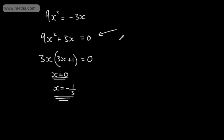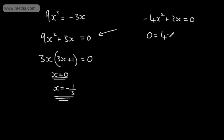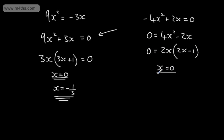All we're doing is factoring them. Let's finish with one more: minus 4x squared plus 2x is equal to 0. I could factor the negative, but alternatively I'll add 4x squared to both sides and subtract 2x from both sides, giving 4x squared minus 2x is equal to 0. We can factor this — 2x is the highest common factor — leaving 2x times 2x minus 1 is equal to 0. So if 2x is equal to 0, then x is equal to 0; if 2x minus 1 is equal to 0, then x is equal to positive 1 half.